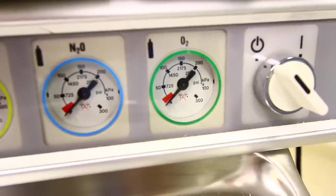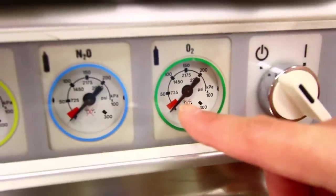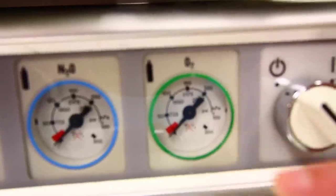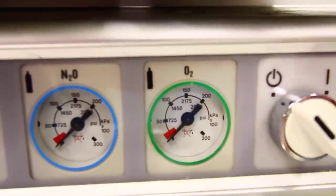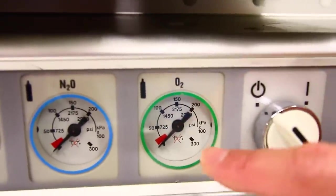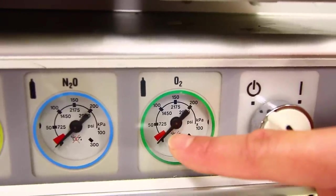This oxygen tank is empty, indicated by the gauge at zero. Also notice this gauge has a picture of a cylinder on it. You need to verify that the oxygen pressure is at least 1000 psi.